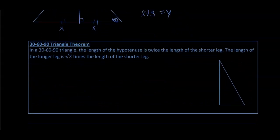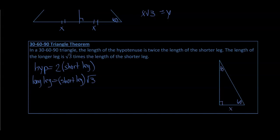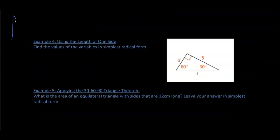The 30-60-90 triangle theorem states: in a 30-60-90 triangle, the hypotenuse is twice the length of the shorter leg, and the longer leg is the square root of three times the length of the shorter leg. So if the right angle is here, 60 degrees here, and 30 degrees here, the short leg is x, the hypotenuse is 2x, and the long leg is x times the square root of three.